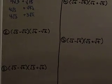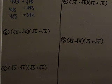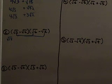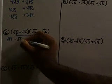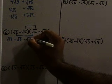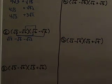On to number two. We have the square root of three minus two times the square root of six minus two. Here we're going to FOIL. The square root of three times the square root of six gives us the square root of 18. Square root of three times negative square root of two gives us minus square root of six. Negative square root of two times the square root of six is negative square root of 12. And negative square root of two times negative square root of two is positive square root of four.